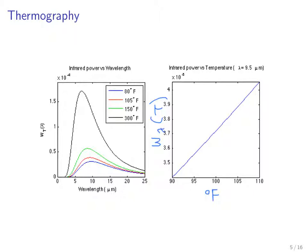Here's an illustration of the W_lambda(T) function, plotted as a function of wavelength for fixed temperatures. We have W plotted across a range of wavelengths at four temperatures: 80°F (lowest curve), 105°F, 150°F, and 300°F (highest curve). The function humps and then goes back down. With the first approach, you measure across a large set of wavelengths, find the peak, and that gives you lambda sub m — for 300°F that occurs around 7.5 microns — then use T = 2898/lambda_m.